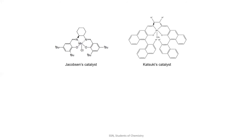These are Jacobson's catalyst and Katsuki's catalyst. These catalysts will first form an active manganese oxo species with sodium hypochlorite. This manganese oxo species is then going to react with the alkene to give the epoxide product.